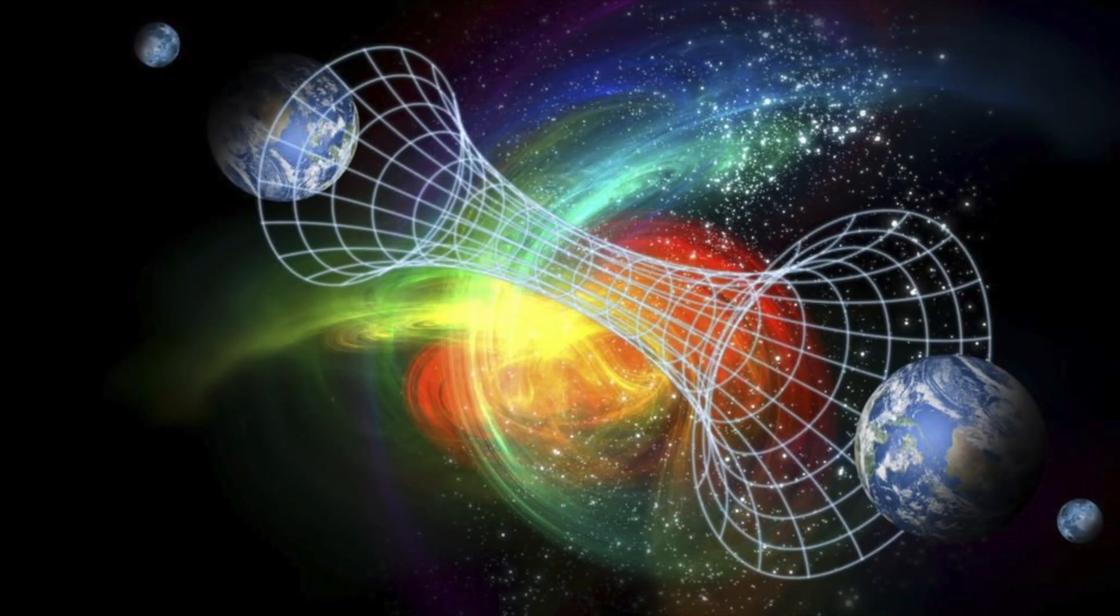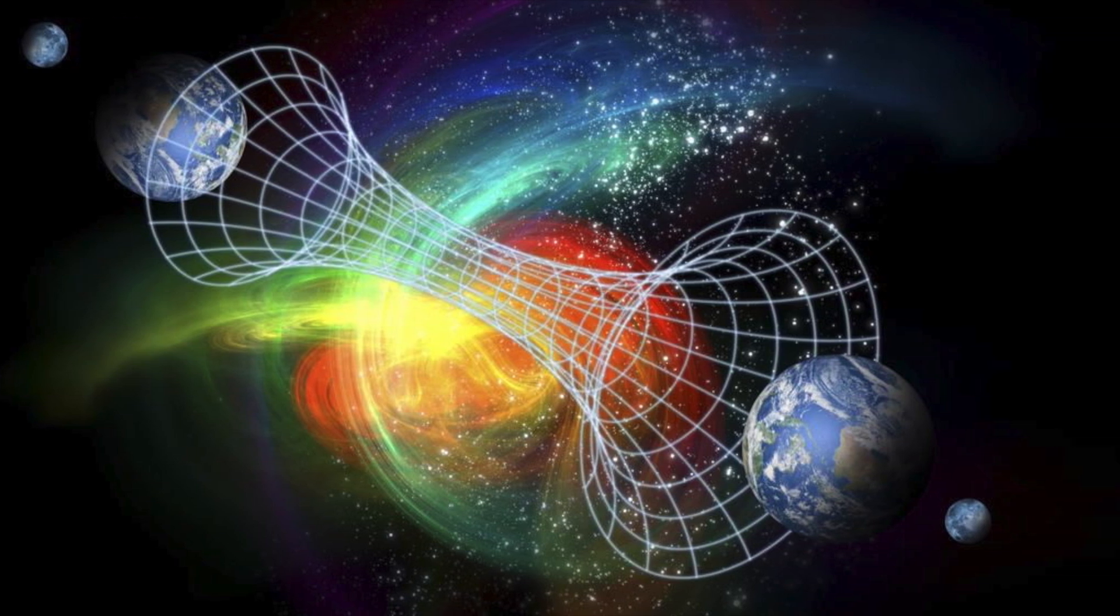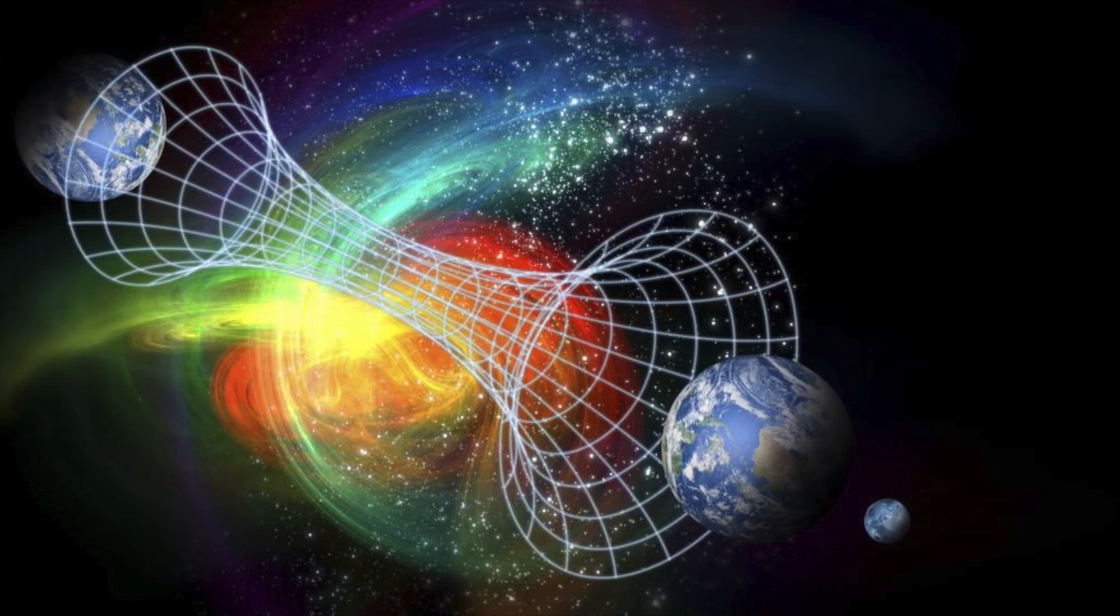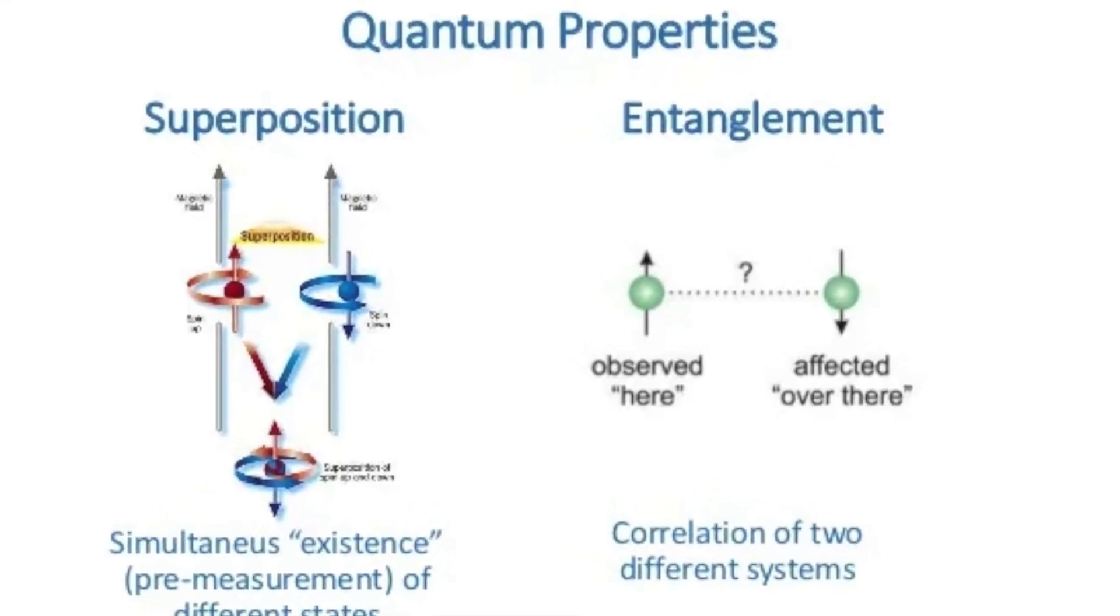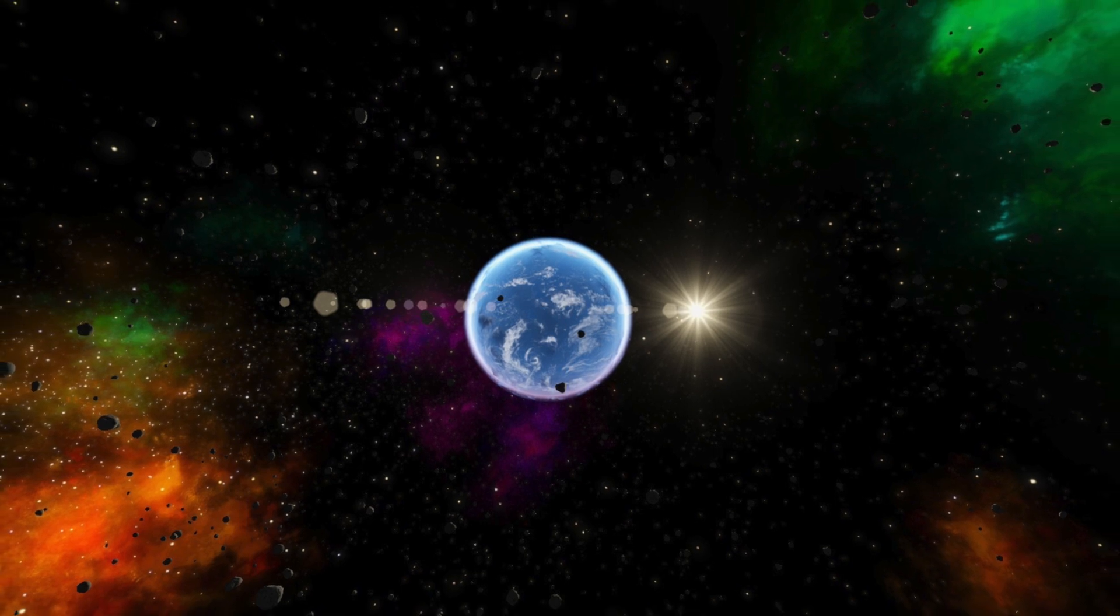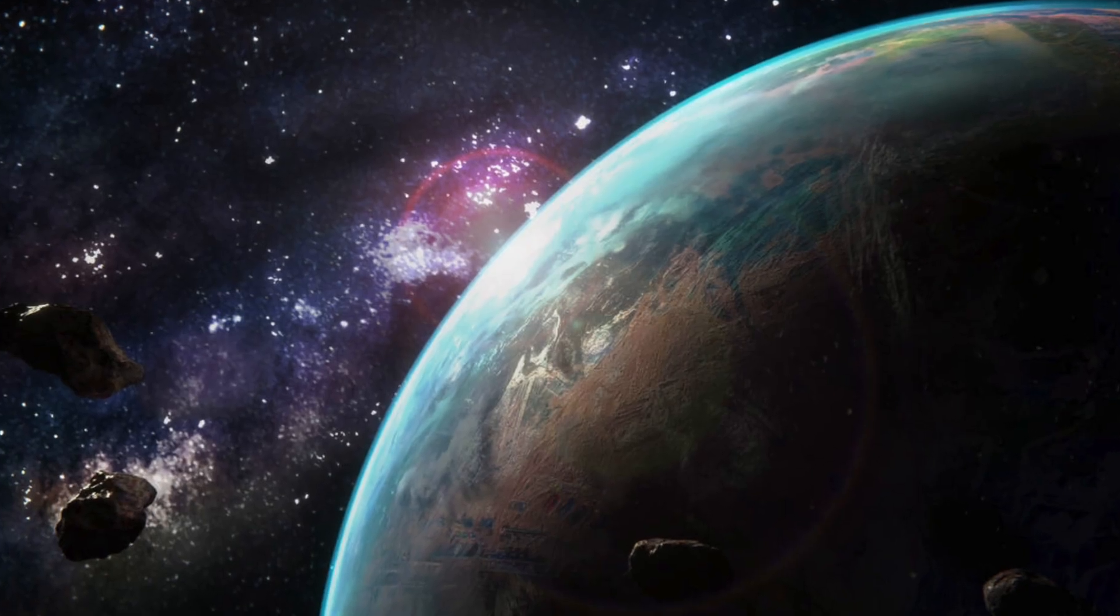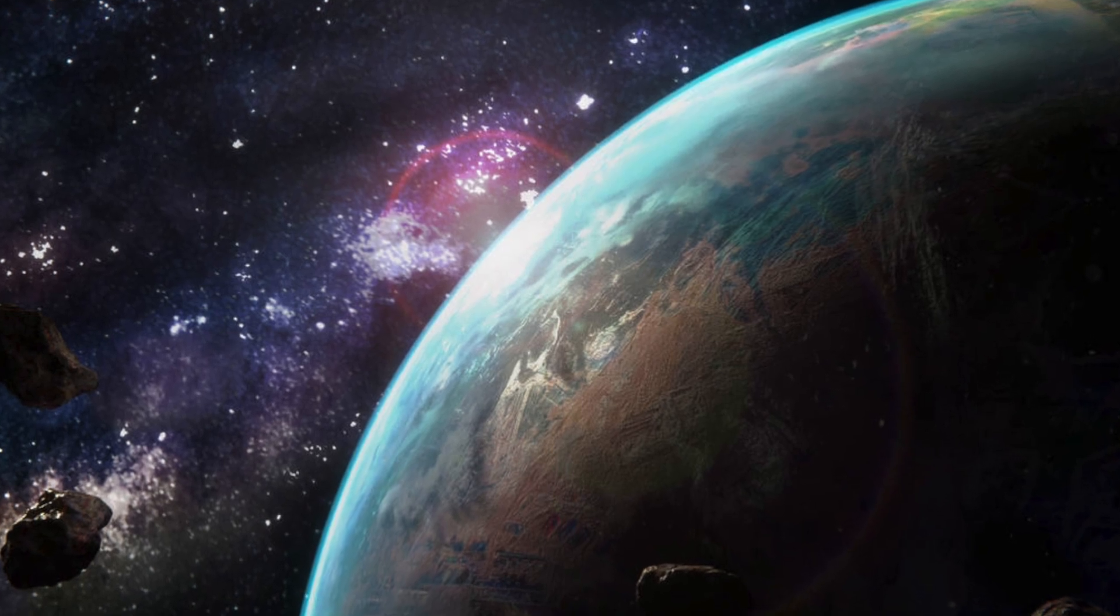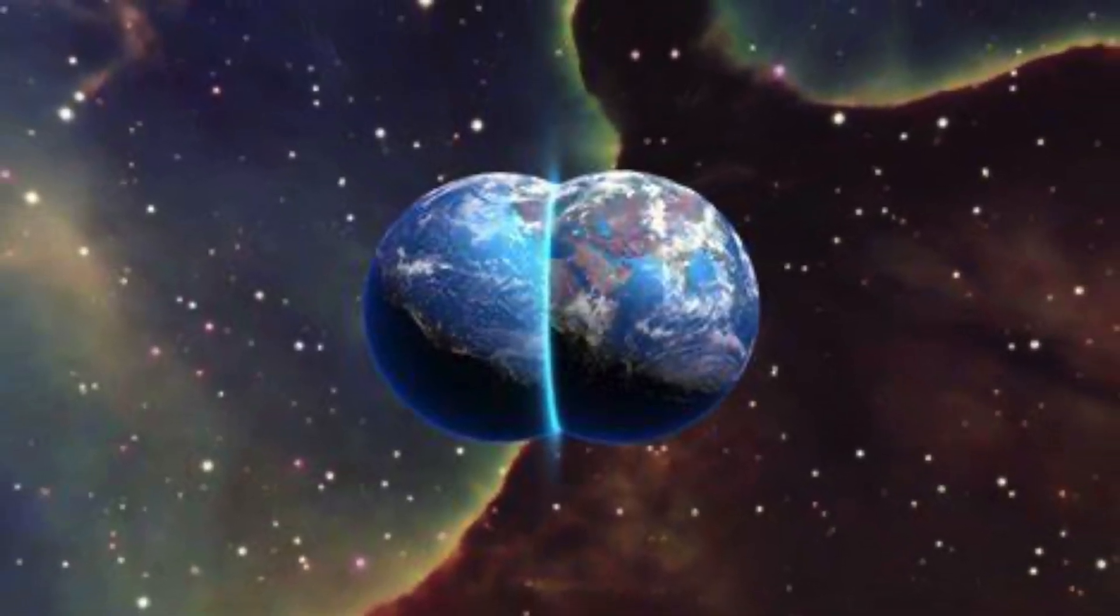Parallel universes in quantum computing. Parallel universes, also referred to as quantum parallelism, is a concept that arises from the principles of superposition and entanglement in quantum mechanics. According to the many-worlds interpretation, proposed by physicist Hugh Everett, every time a quantum measurement occurs, the universe splits into multiple branches, with each branch corresponding to a different outcome of the measurement.